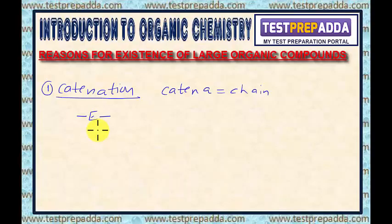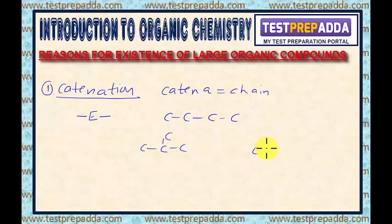Chains and rings can have branches and cross links. For example, if I write this, this is the skeleton of four carbon atoms. I can do the branching in this manner.